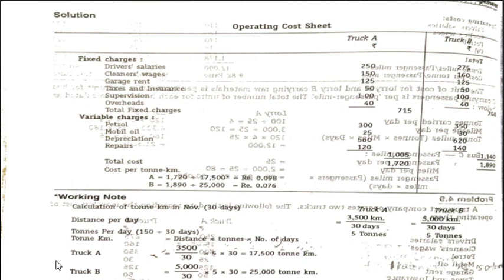We need to calculate ton kilometers. The information given is 150 tons carried by both truck A and B for the month of November, and the kilometers are also given. We will take 30 days for all months when calculating in the operating cost sheet. Distance per day and tons per day will be calculated. First, let us calculate distances per day.